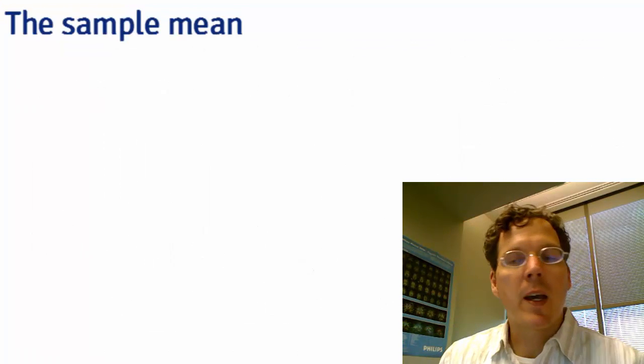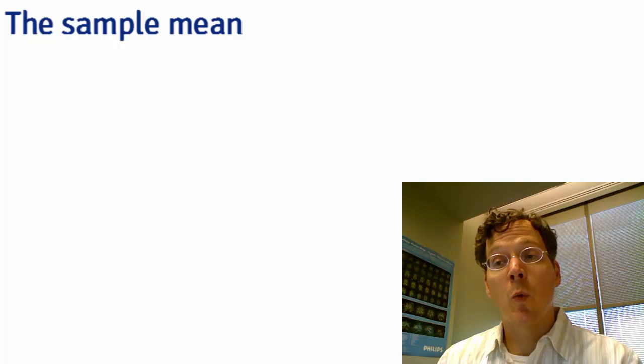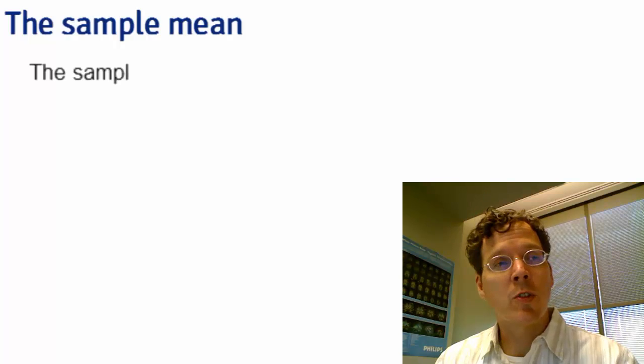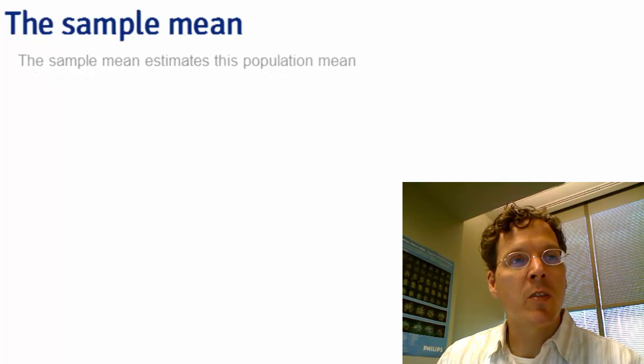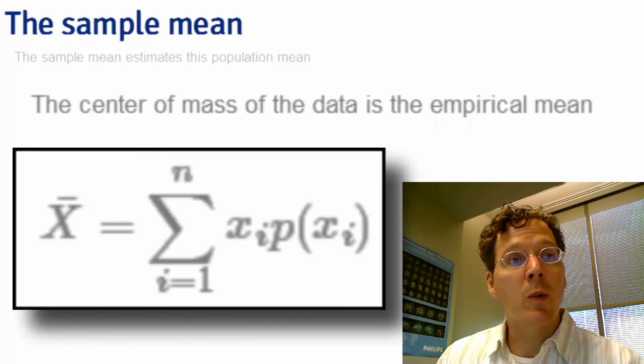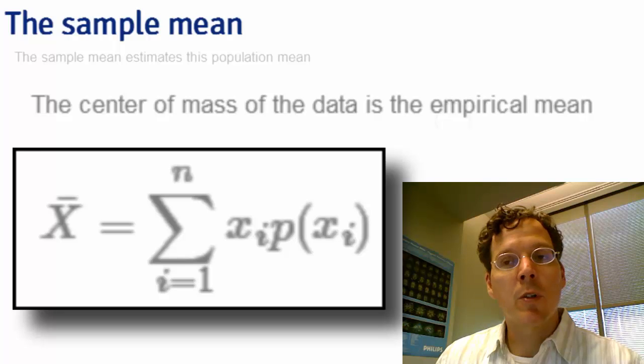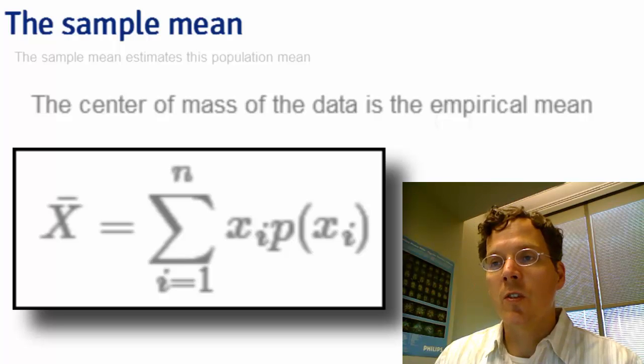This idea of center of mass is actually useful in defining the sample mean. Remember, we're talking about in this lecture the population mean, which is estimated by the sample mean. But it's interesting to note that the sample mean is the center of mass if we treat each data point as equally likely. Where the probability is 1 over n and each data point xi has that probability. If we were to find the center of mass for the data, that is exactly x bar. So we intuitively use this idea of center of mass even when we use a sample mean.